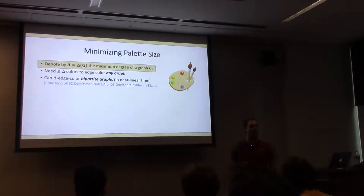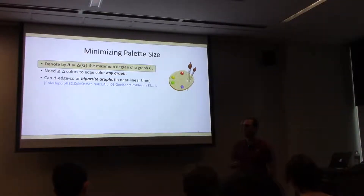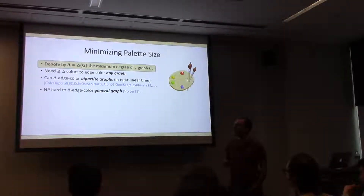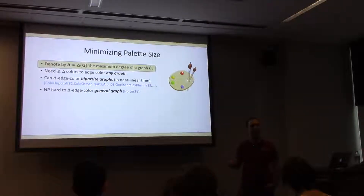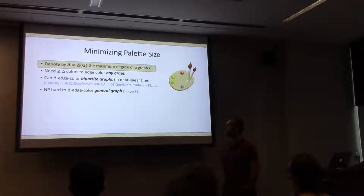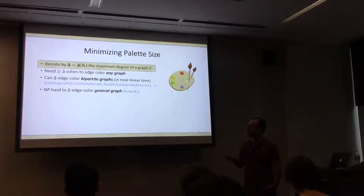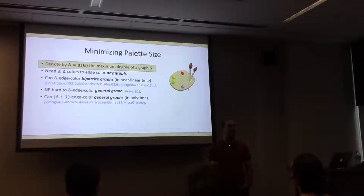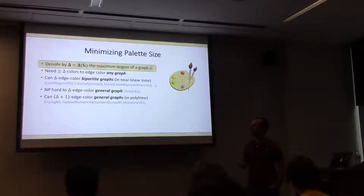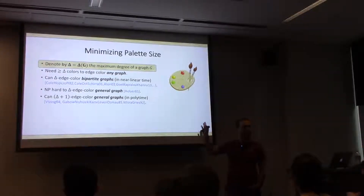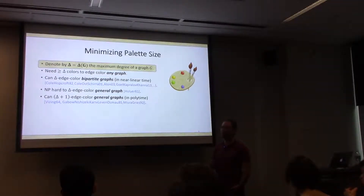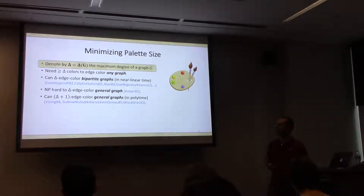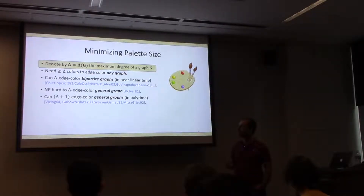For general graphs, delta colors aren't always sufficient. Even just a triangle shows you can sometimes need delta plus one. Determining whether a particular general graph can be delta edge colored is NP-hard — a classic result. Fortunately, any general graph can be delta-plus-one edge colored, due to a classic theorem of Vizing from the 60s, and all proofs are constructive and give a poly-time algorithm.